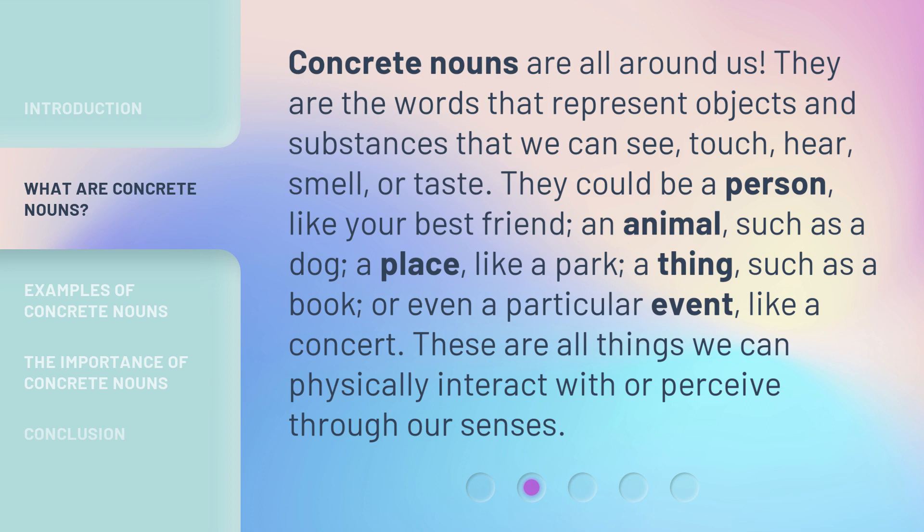Concrete nouns are all around us. They are the words that represent objects and substances that we can see, touch, hear, smell, or taste. They could be a person, like your best friend, an animal such as a dog, a place like a park, a thing such as a book, or even a particular event like a concert. These are all things we can physically interact with or perceive through our senses.